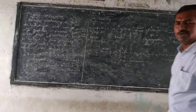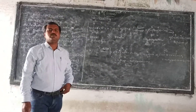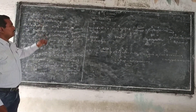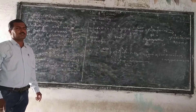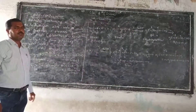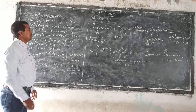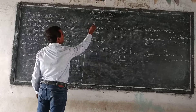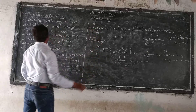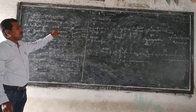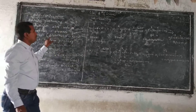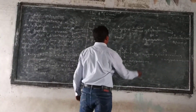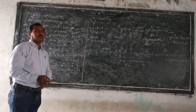Aldol Condensation is a very important reaction from an examination point of view. We are studying reactions of aldehydes and ketones, and this reaction is very important in this chapter. The condition is that aldehydes or ketones must contain at least one active alpha-hydrogen atom. Aldehydes containing at least one alpha-hydrogen atom undergo this reaction in the presence of dilute sodium hydroxide or potassium hydroxide as a catalyst to form a beta-hydroxy aldehyde.